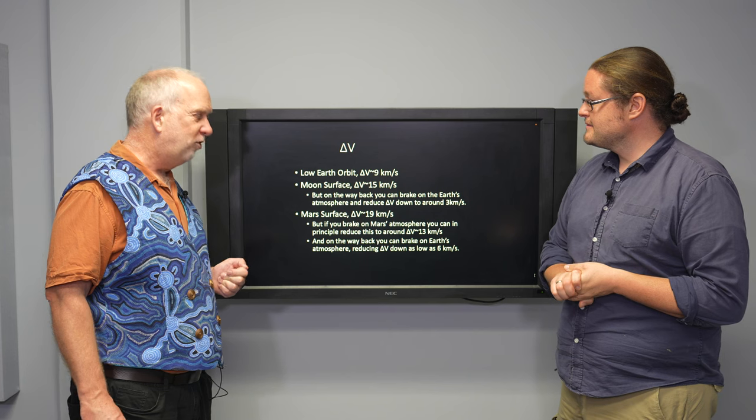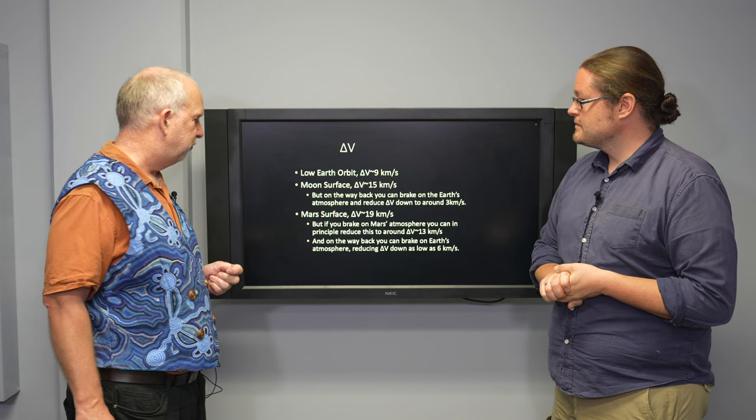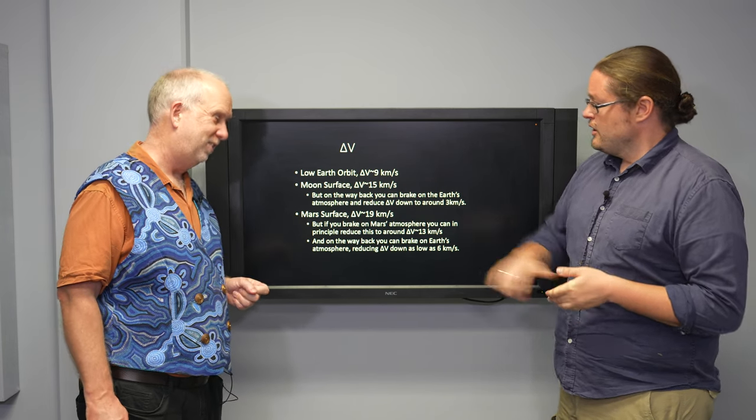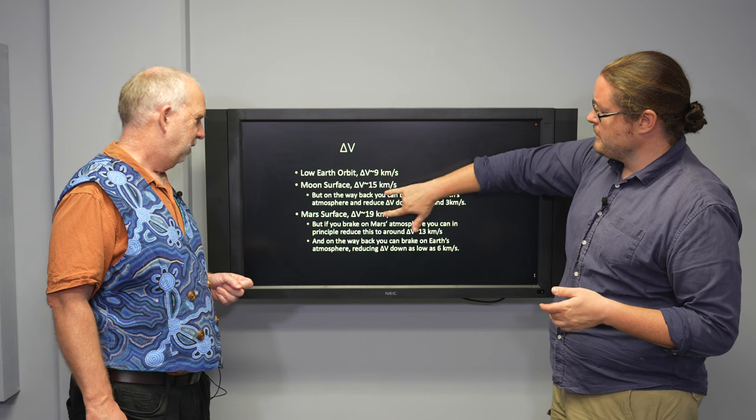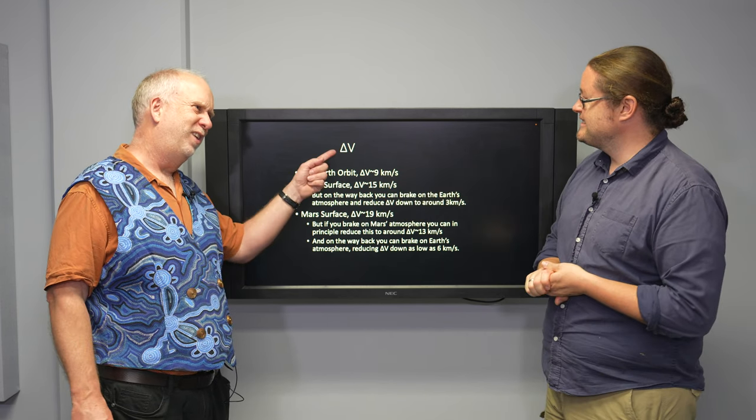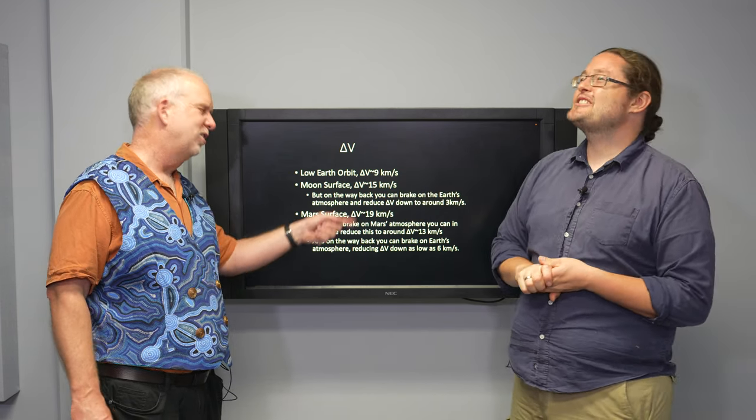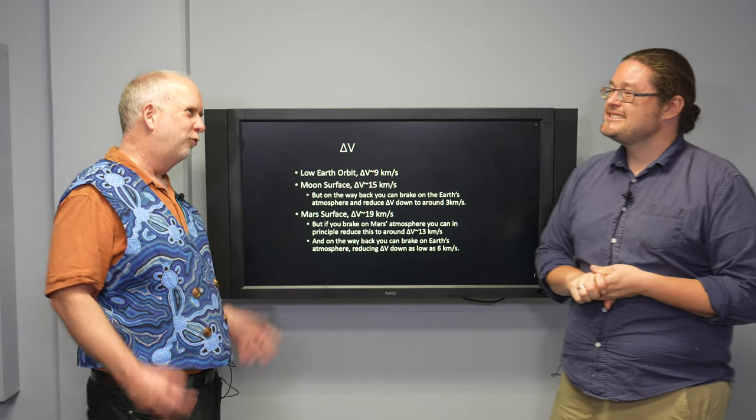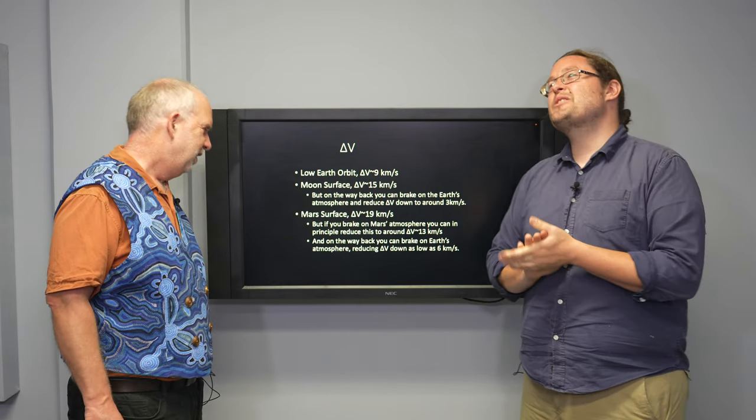Now to get to Mars and we're going to go all the way from the Earth's surface to Mars surface. We're using rockets the whole way. It's 19 kilometers a second. So it's only four different from the Moon to Mars. But remember it's exponential, rocket equation exponential. Going from 15 to 19 can make you fuel four times more or something like that.